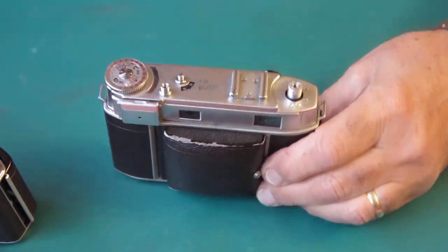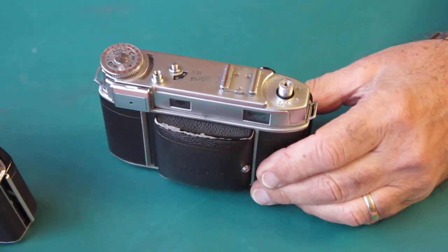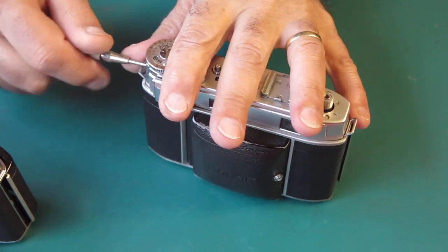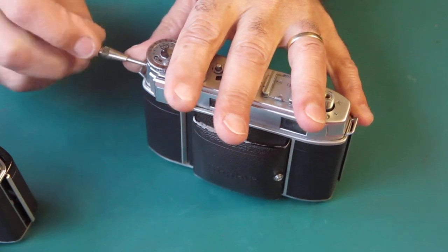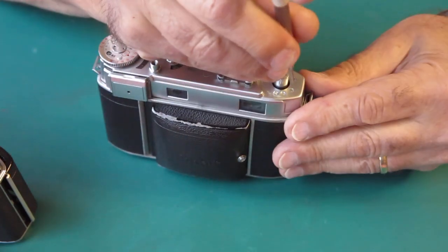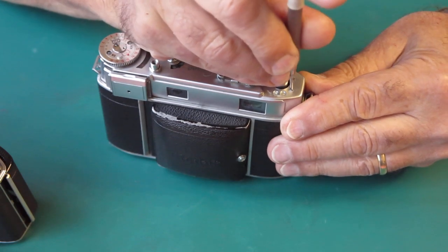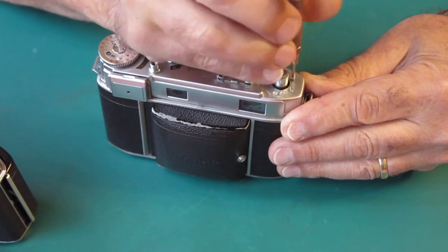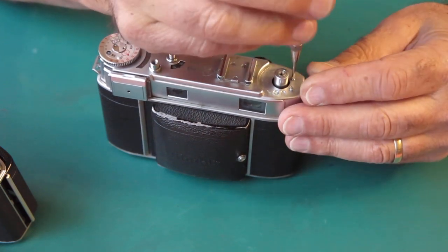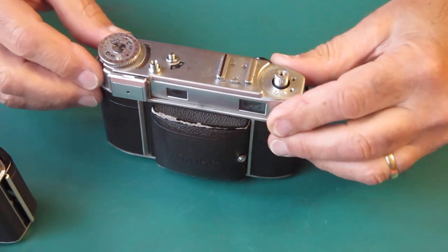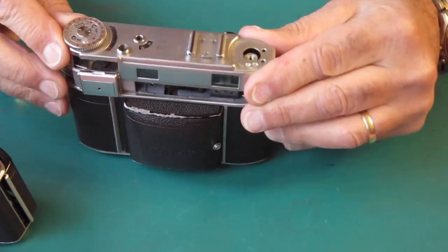Now the top cover on the 3 small C. A single screw at the meter end. Two screws at the rewind end. And the top cover should just lift off.